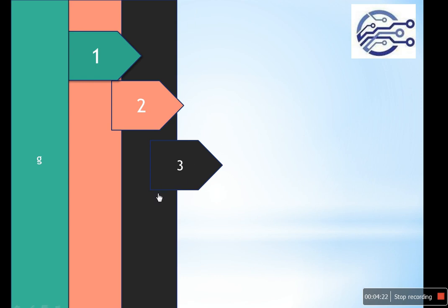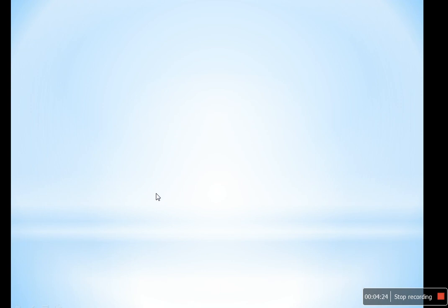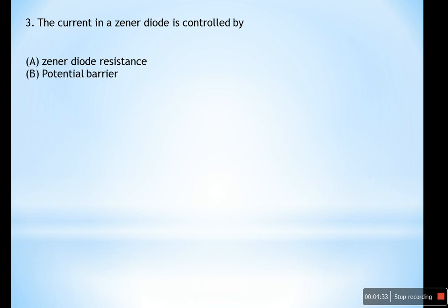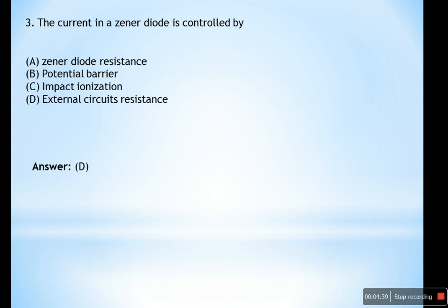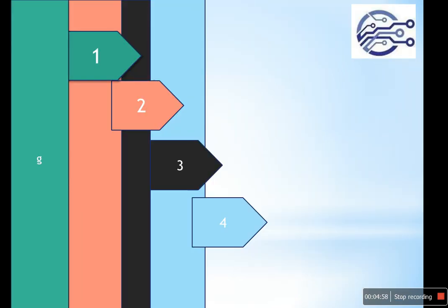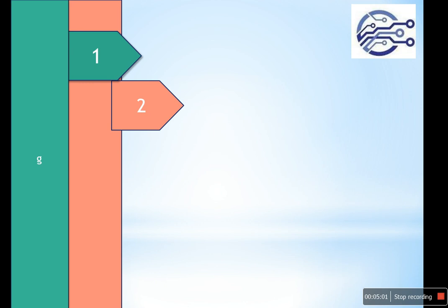Question number three: The current in a Zener diode is controlled by — (A) Zener diode resistance, (B) potential barrier, (C) impact ionization, or (D) external circuit resistance. The Zener diode is generally used as a voltage regulator, and the current in a Zener diode is controlled by the external circuit resistance.